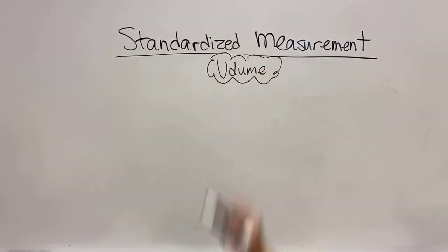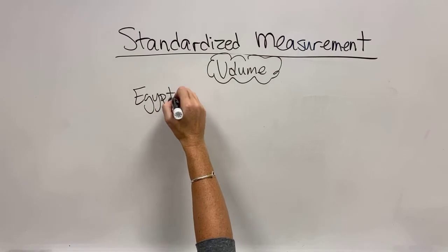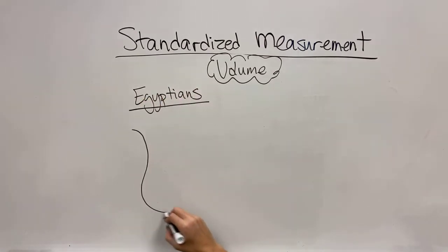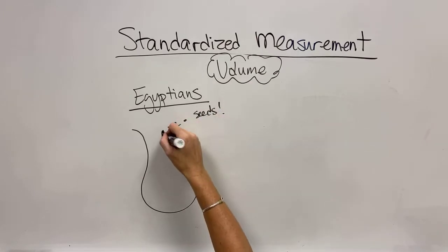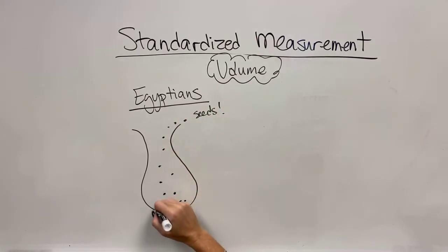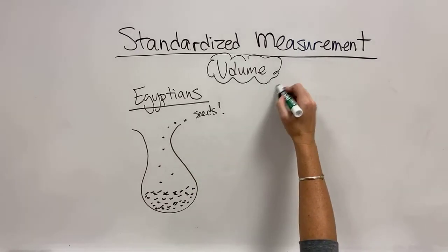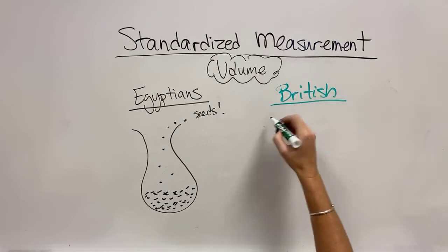Volume, again, was a situation that they measured in what? You guessed it, grains. And so, the Egyptians would drop seeds into jars and they would measure how many seeds the jar held. And that would be the volume of that jar. A very laborious counting situation, as you can imagine.